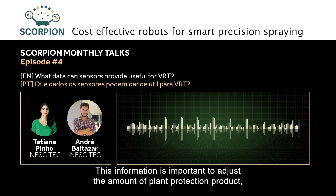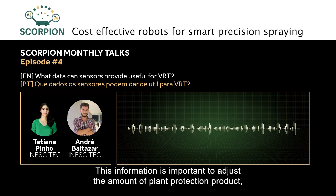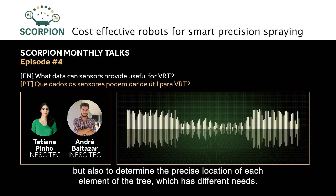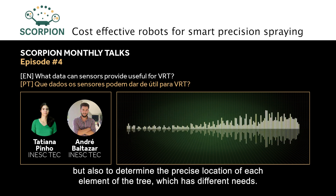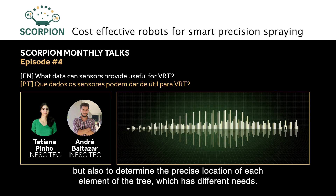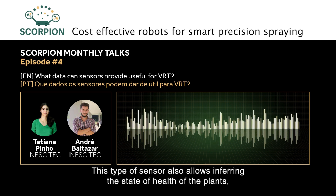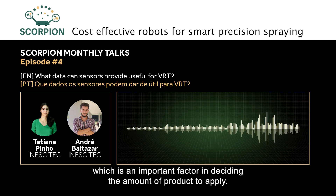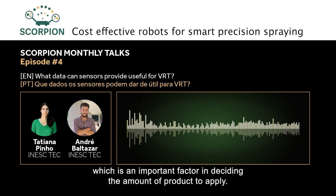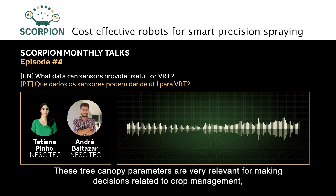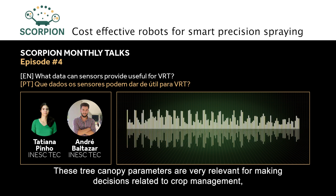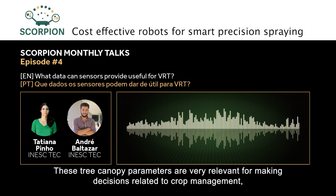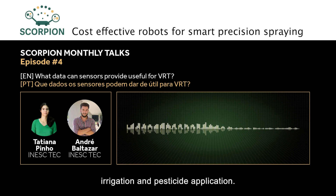This information is important for adjusting the quantity of phytopharmaceutical product, but also for determining the precise location of each tree element that has differentiated needs. This type of sensor also allows inference of plant health status, which is an important factor in deciding the quantity of product to apply. These canopy parameters are very relevant for making decisions related to crop management, irrigation, and pesticide application.